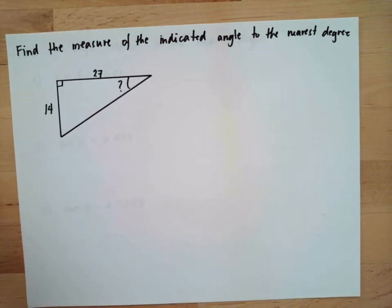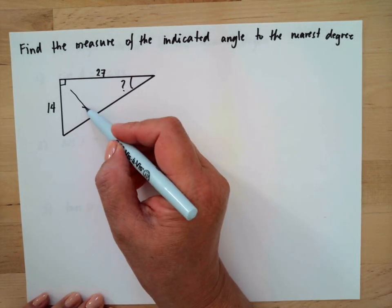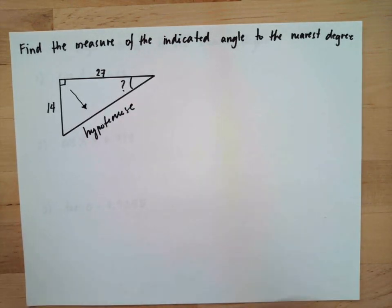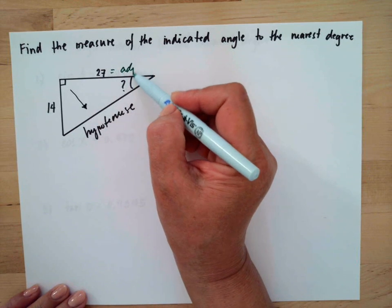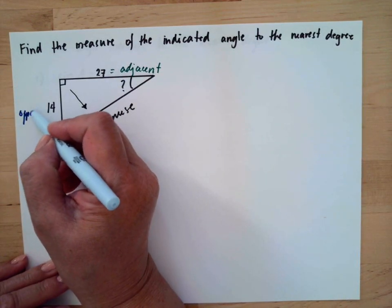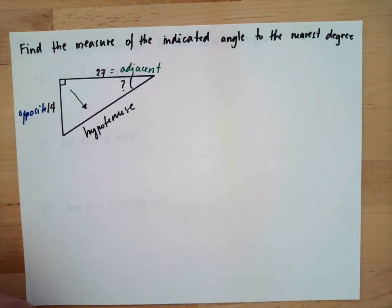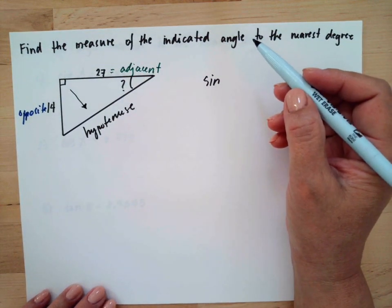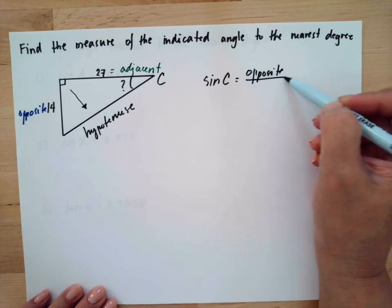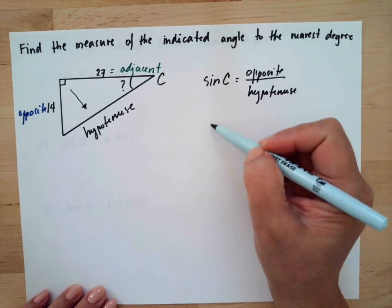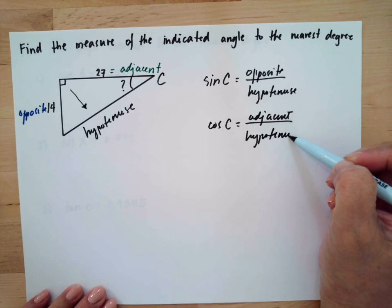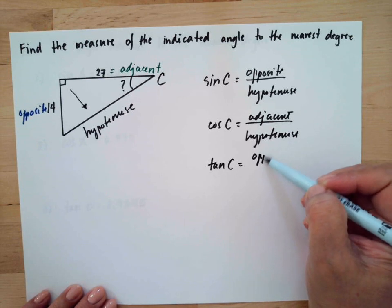Next problem: we need to identify the angle again. Opposite the 90-degree angle is the hypotenuse. Beside the reference angle is the adjacent, and away from the reference angle is the opposite. Assuming this is angle C: sine C equals opposite over hypotenuse, cosine C equals adjacent over hypotenuse, and tangent C equals opposite over adjacent.